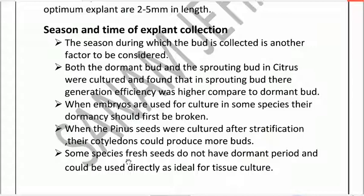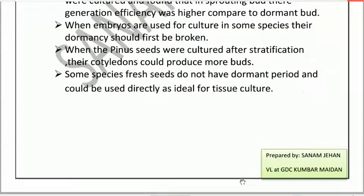Some species have fresh seeds. When seeds are determined to be in a dormant period, they should first complete that dormancy before being used in tissue culture. If buds are in dormancy, it can affect their activity in culture.